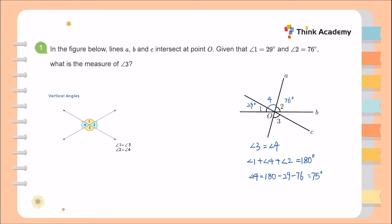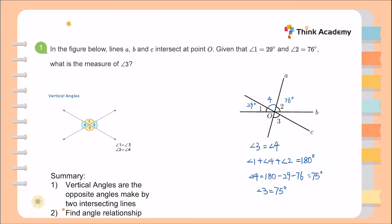Because angle 3 equals angle 4, therefore angle 3 equals 75 degrees. In this question, we need to understand that vertical angles are the opposite angles made by two intersecting lines and that opposite angles have the same degree. We also need to understand angle relationships and that a straight angle equals 180 degrees.